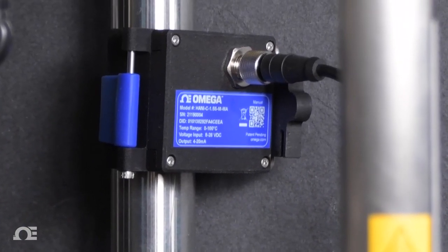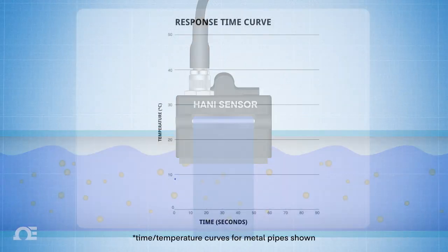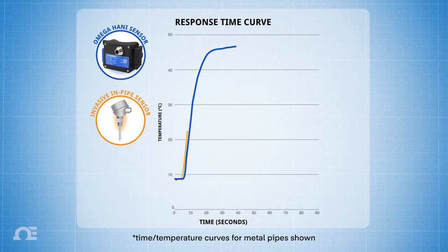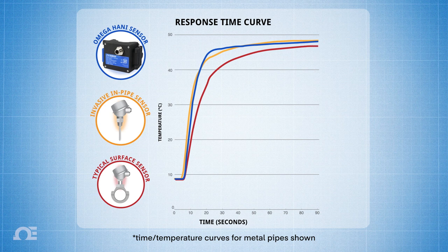Omega's HANI high-accuracy non-invasive clamp temperature sensor measures in-pipe or in-tank fluid temperatures with the same speed and accuracy of invasive immersion sensors, while far surpassing the performance level of traditional surface sensors.